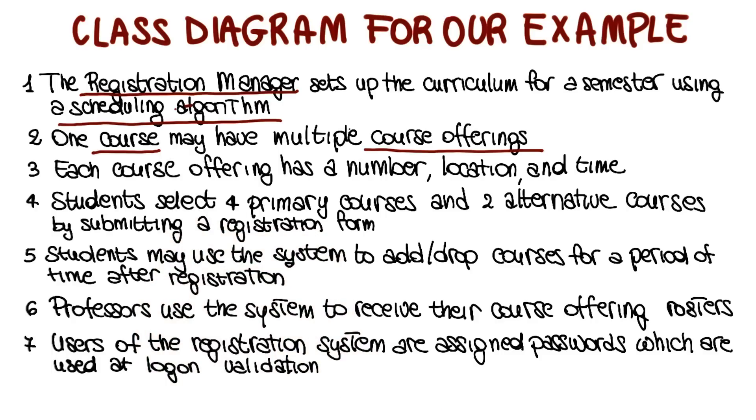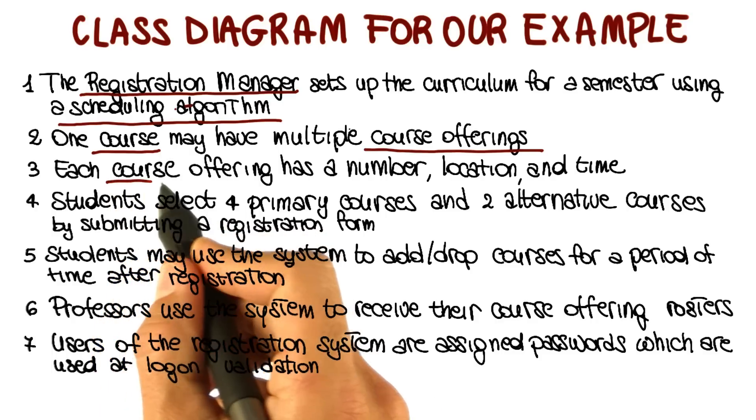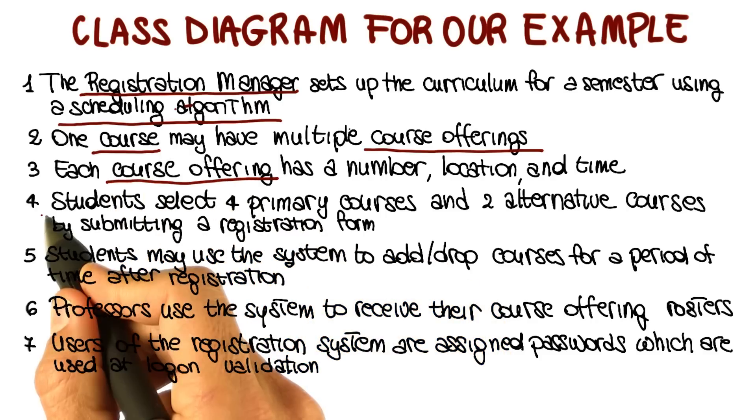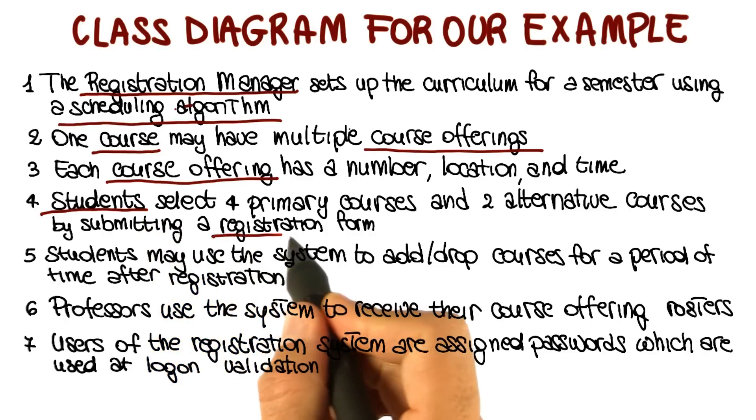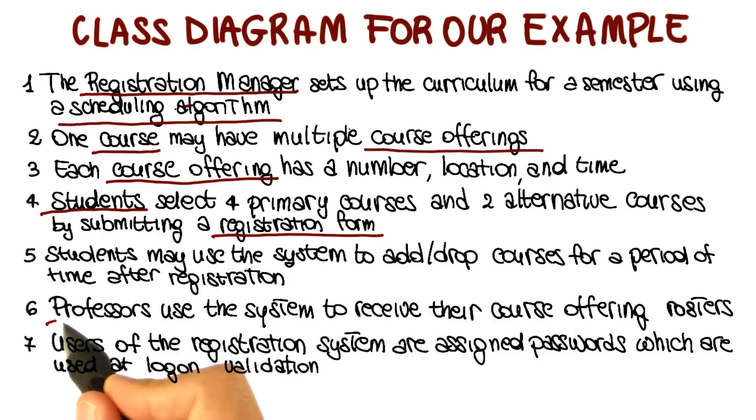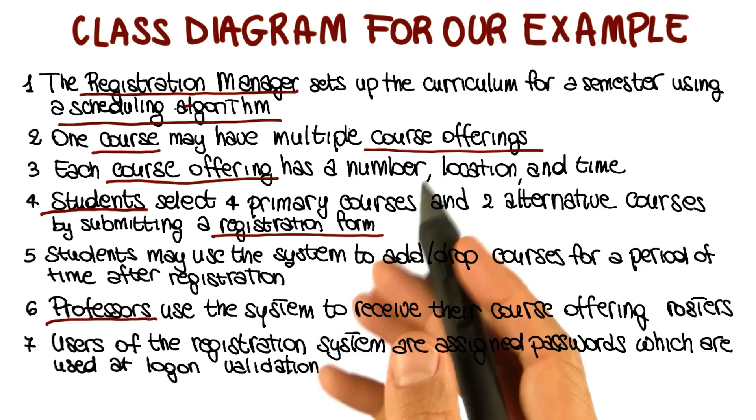Course offering here again. Definitely the students seem to be a relevant noun, and so is probably the registration form and the professors. At this point, I've identified seven possible classes for my system.